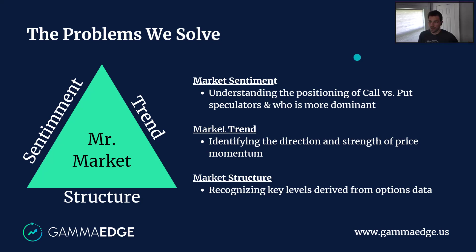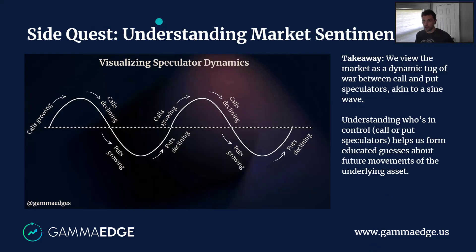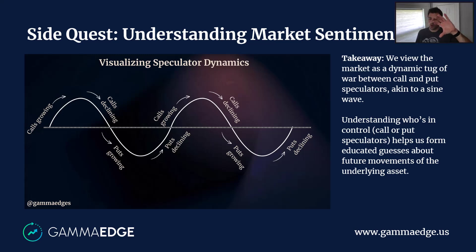Pillar one is market sentiment. This hits on understanding who is winning the battle between call and put speculators. We believe that options markets are driven by in-the-money and out-the-money call speculation. As this sine wave graphic depicts, we want to understand — is call speculation growing? Where are we in the sine curve? If we're at the top, those call speculators could be monetizing their positions and put speculators may be growing. Understanding where we are in that sine wave sets the stage for whether we're in a bullish or bearish environment.